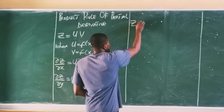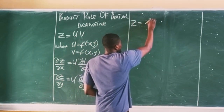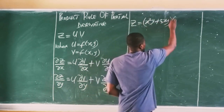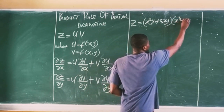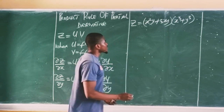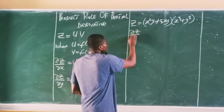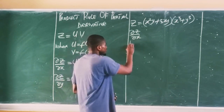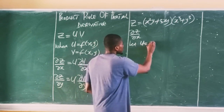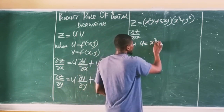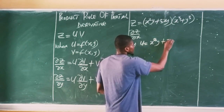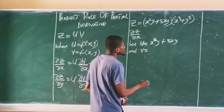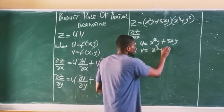For instance, consider that Z is equal to X squared Y plus 3XY, multiplied by X cubed plus Y cubed. I am asked to find the partial derivative of Z with respect to X. The first thing to do is let U be equal to X squared Y plus 3XY, and let V be equal to X cubed plus Y cubed.